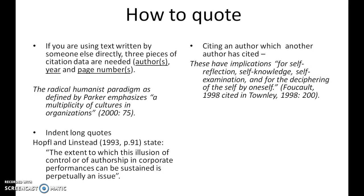If you're citing an author which another author has cited, you say 'Foucault (1998) cited in Townley.' That's if you can't go back to the original material, but it's always a good idea to go back to the original if you can find it. One thing to mention is consistency — I've used 'year 2000: 75' in one case and '1993, p.91' in the next. Is this consistent? It is — I'm demonstrating that there are different variations on Harvard used from institution to institution.